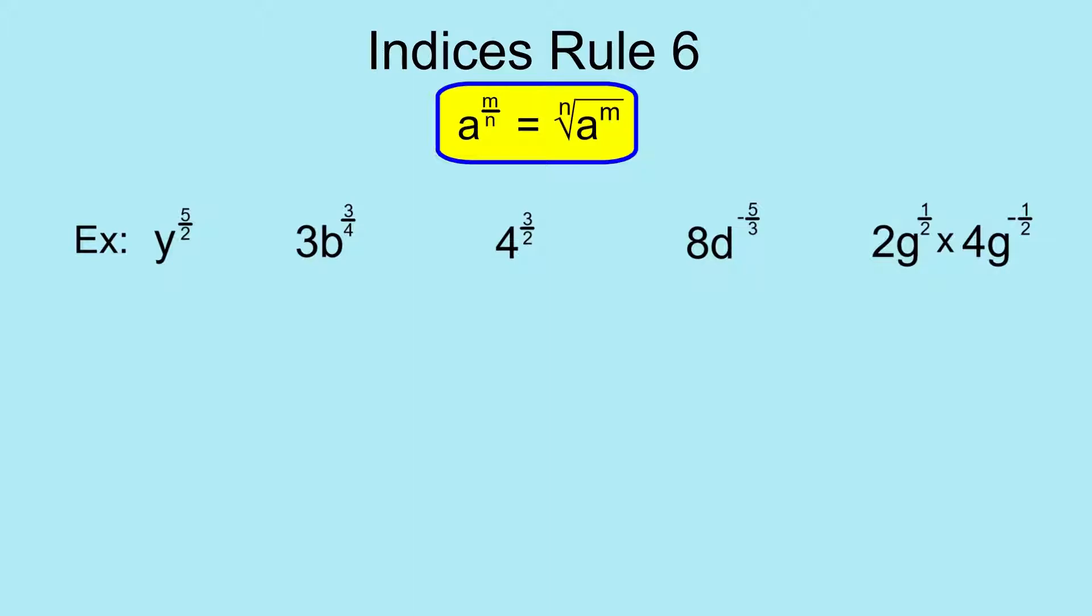In the yellow box up at the top, we've got a to the power m over n equals the nth root of a to the power m. Some people like to remember that using something called flower power. That comes from the fact that flower has a root. The root is at the bottom of the flower. So the bottom of the fraction, we've got the n, which is the nth root, and that leaves the m on the top to be the power.